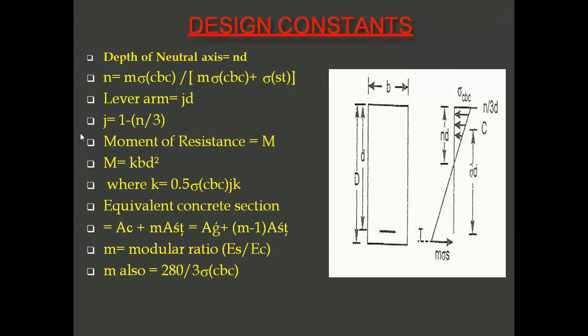Design constants required include: depth of neutral axis, lever arm g, and moment of resistance M. These constants, including modular ratio m, are available in IS 3370 as well as IS 456:2000. Values of k and related constants must be known before starting any numerical problem.